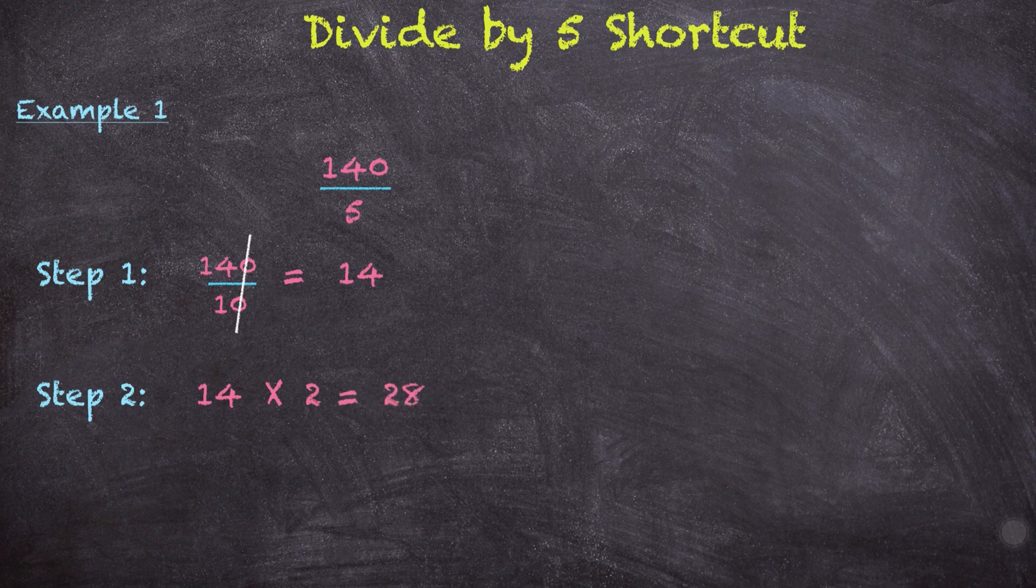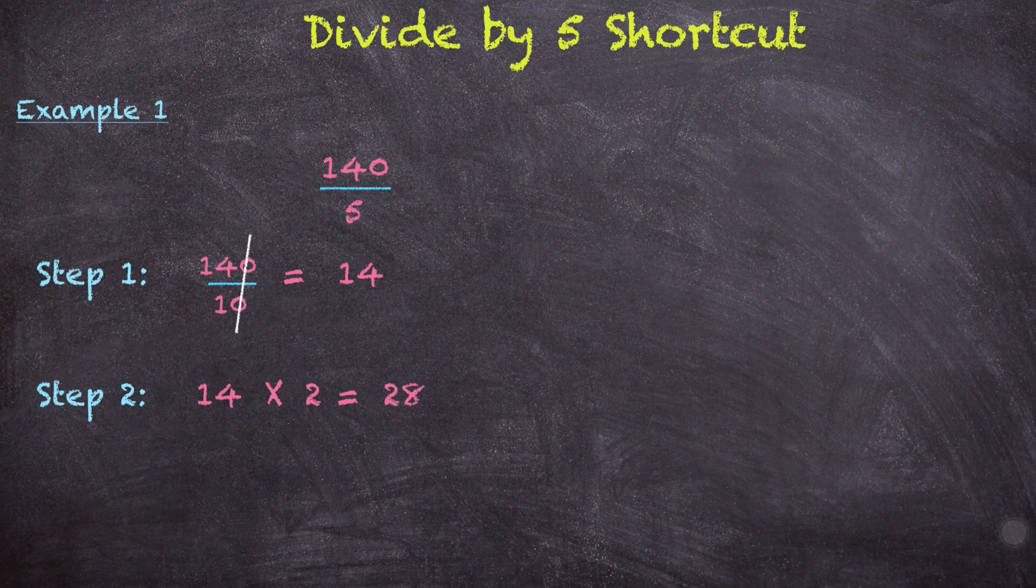So there you have it, 140 divided by 5 is equal to 28. Let's do another example.